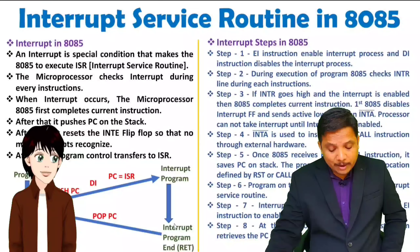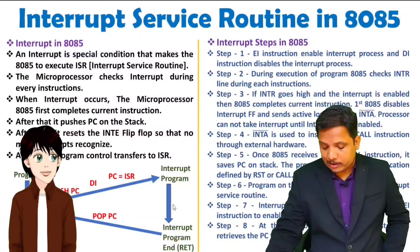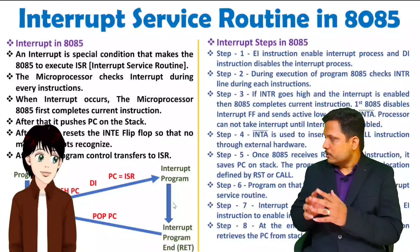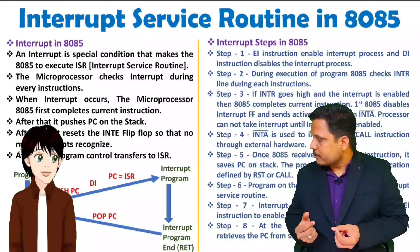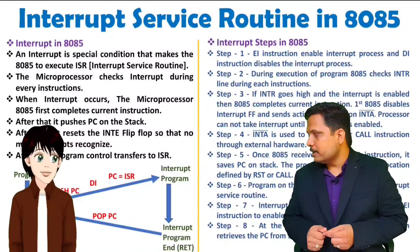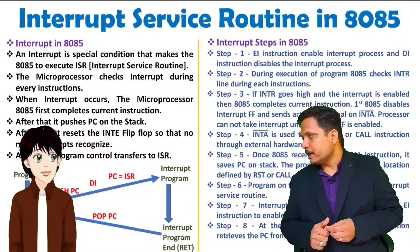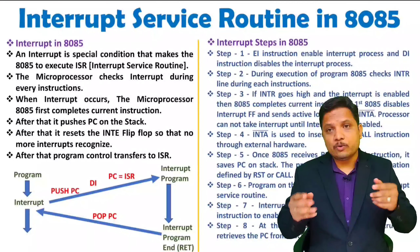If you write EI at the end of the interrupt program, then during the ISR execution you cannot take another interrupt. So the key is where you write EI. If you write EI at the beginning of the interrupt service routine, then during that interrupt program you can take another interrupt. But if you write EI at the end, you cannot take another interrupt while servicing the current one. To give higher priority to the current interrupt, write EI at the end. For lower priority interrupts, write EI at the initial instructions of the interrupt program. Thank you so much for watching this video.